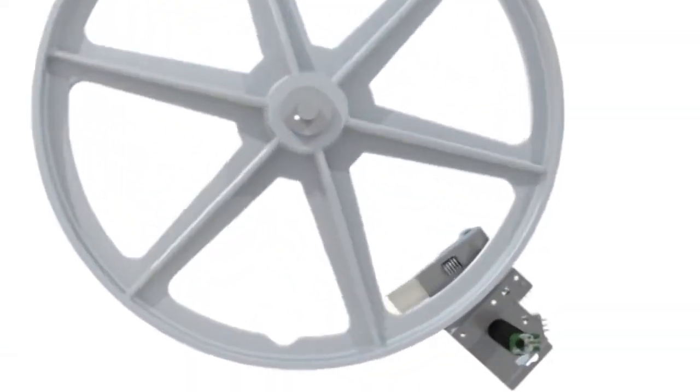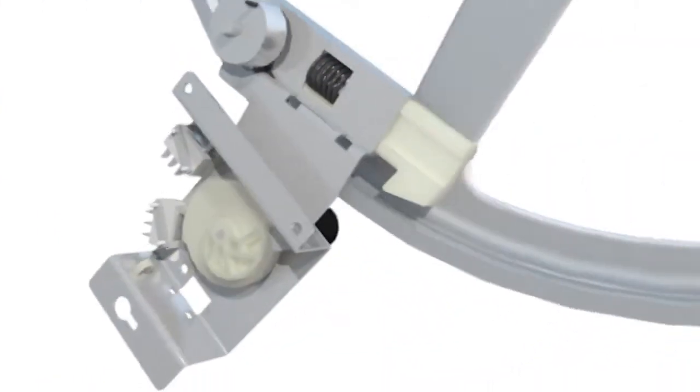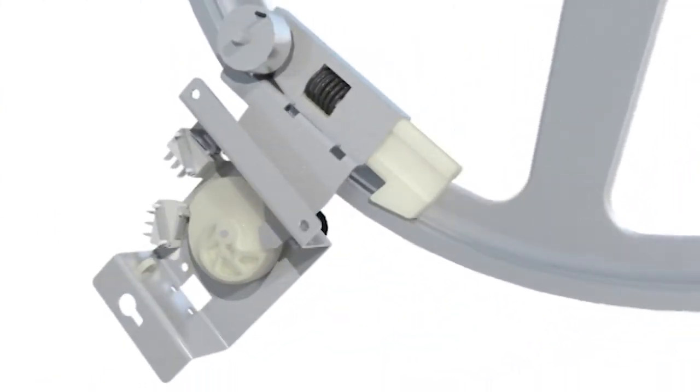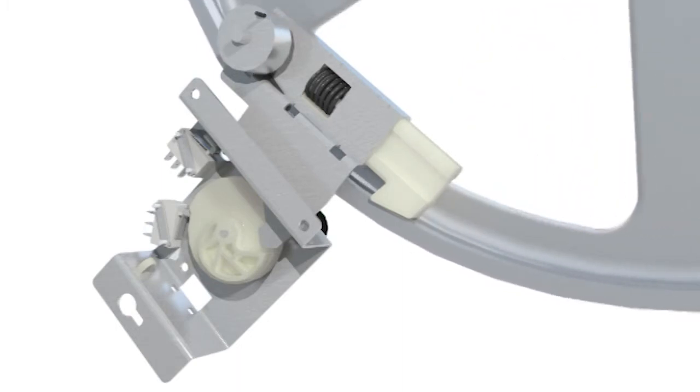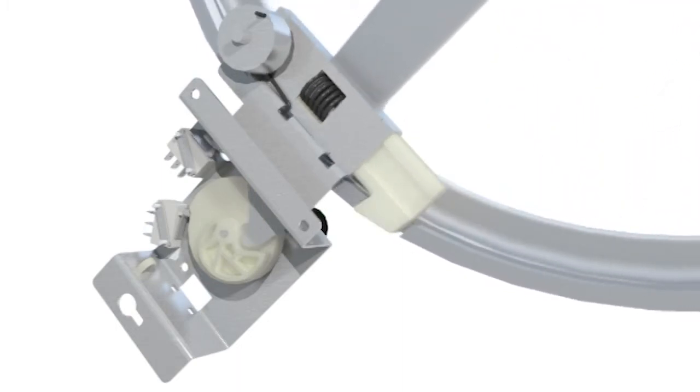At the end of the cycle, the drum automatically aligns itself with the door aperture. The drum locks into position, perfect for unloading the laundry.